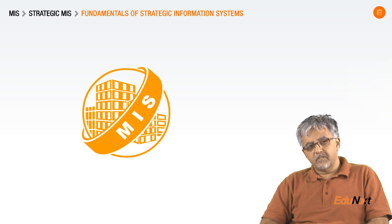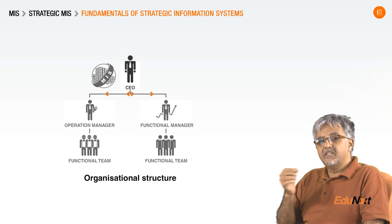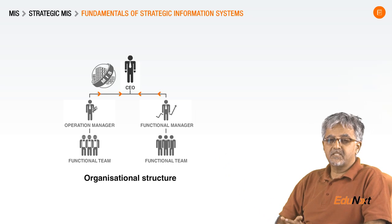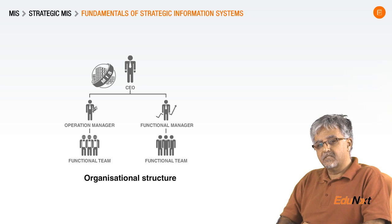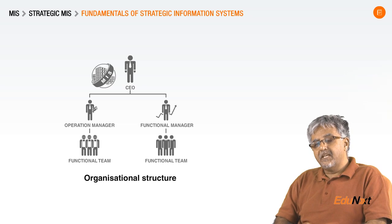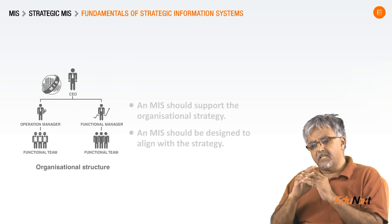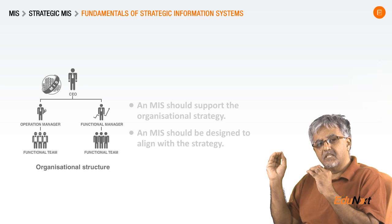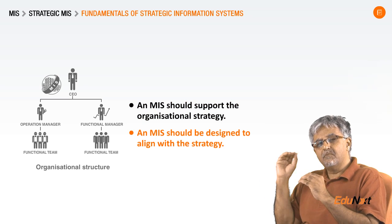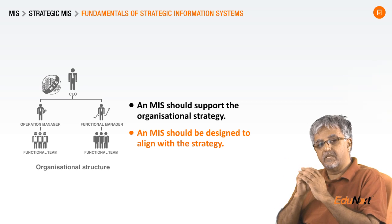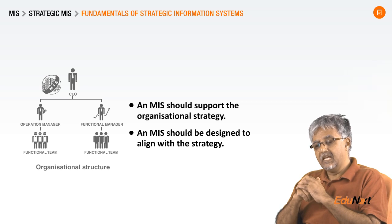An MIS for an organization is like its nervous system. An MIS delivers and carries information throughout the organization, and it is very crucial and critical to the well-being of an organization. An MIS is what makes an organization responsive or unresponsive, as the case may be. Since MIS is the nervous system of an organization, it must support the organizational strategy in every way, and the MIS should be designed to be aligned with the strategy.